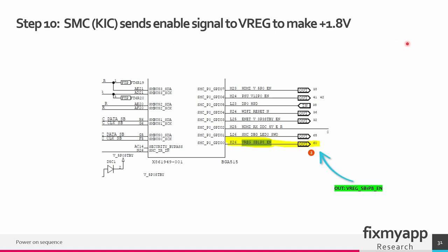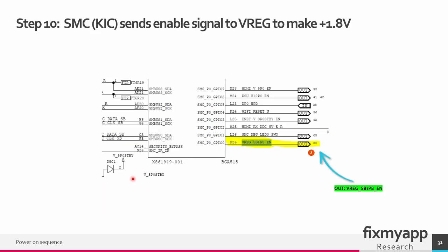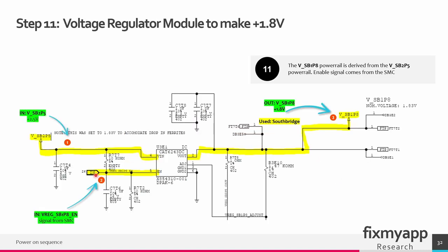The next power rail to be generated is the 1.8 volt, also used by the Southbridge IC. The Southbridge IC sends an enable signal called voltage regulator Southbridge 1.8 enable, which goes to the next voltage regulator that creates the 1.8 volt. In step 11 we create the 1.8 volt power rail from the 2.5 volt power rail — the 2.5 volt is also the power supply for this IC. The enable signal comes from the Southbridge IC and goes into pin 5, the enable pin. The IC turns on and starts generating 1.8 volt, which is used by the Southbridge IC.